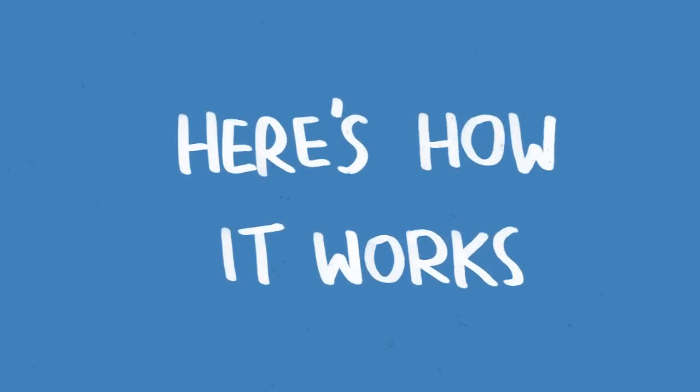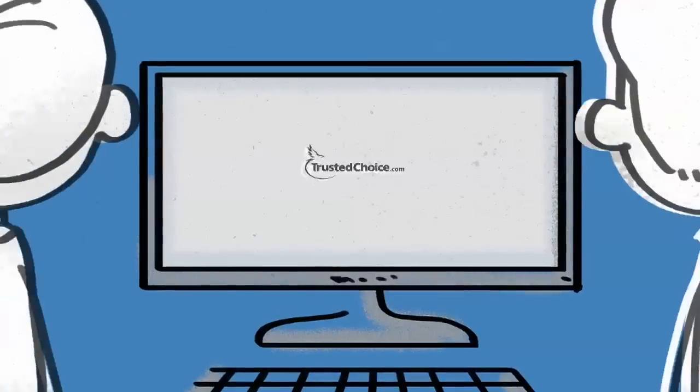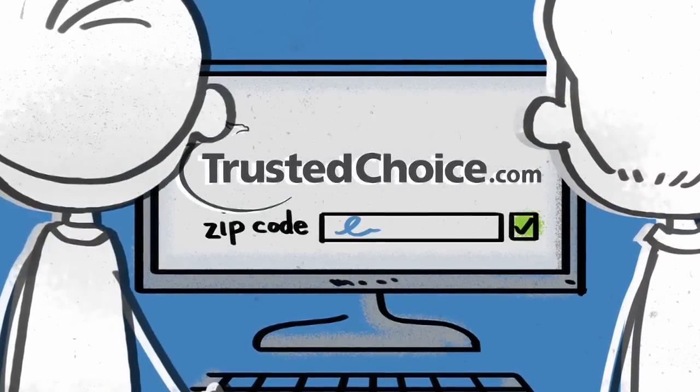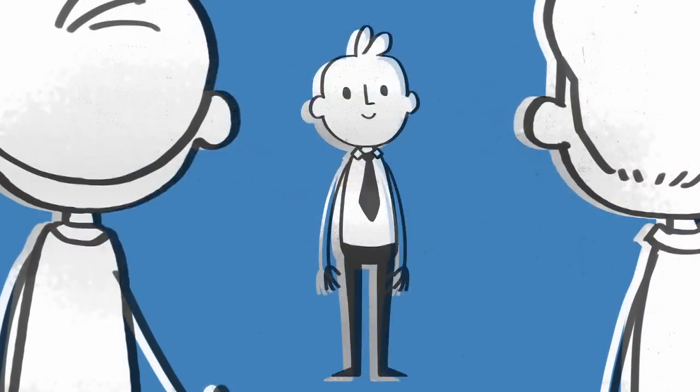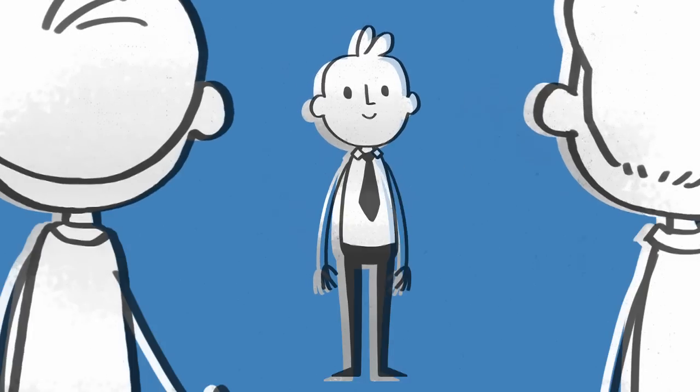Here's how it works. Trustedchoice.com is already a popular resource for people researching insurance. Based on the information they request, they choose the one agent that best matches their needs. Not 30.